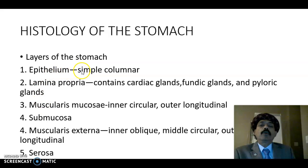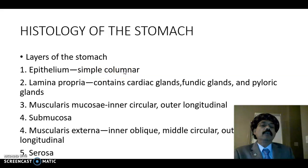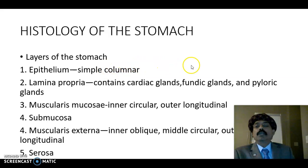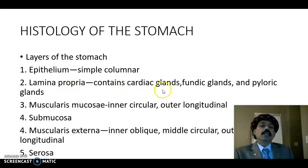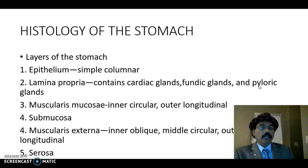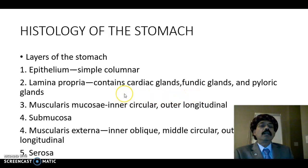The epithelium is simple columnar epithelium. This is a change from the esophagus — in the esophagus we have the stratified squamous non-keratinized epithelium, but in the stomach we have the simple columnar epithelium. The lamina propria contains the cardiac glands, fundic gland, and pyloric gland. Our stomach has the cardiac end, the pyloric end, the fundus, and the body of the stomach, so the glands differ from one region to another.